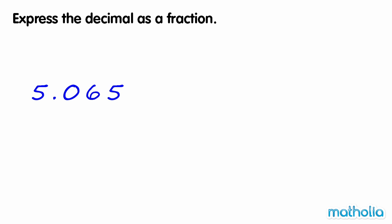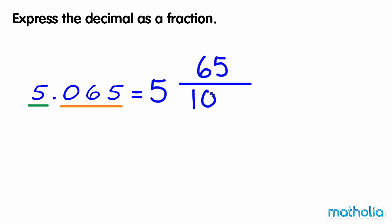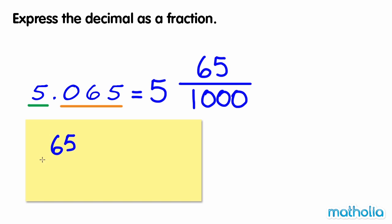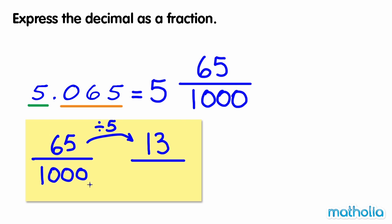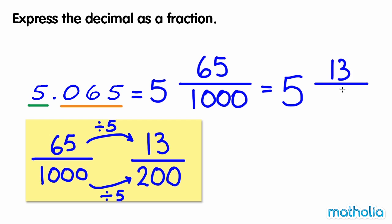Express the decimal as a fraction. This number has a whole number part of five and a decimal part of sixty-five thousandths. We can express this as the mixed number five and sixty-five thousandths. Let's simplify sixty-five thousandths by dividing the numerator and the denominator by five. Sixty-five thousandths is equal to thirteen two-hundredths. So five point zero six five is equal to five and thirteen two-hundredths.